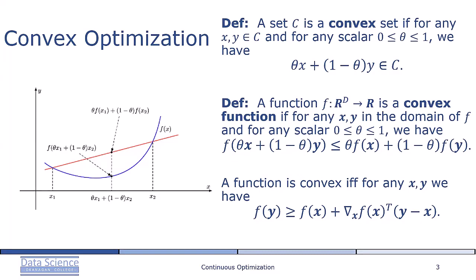Convex functions, on the other hand, are functions such that the straight line θ between any two points of the function lie above the function.